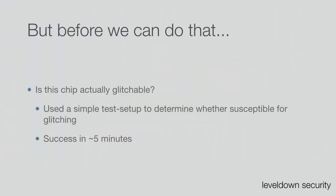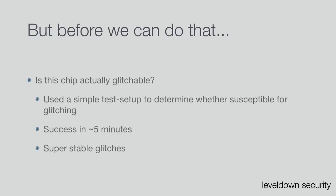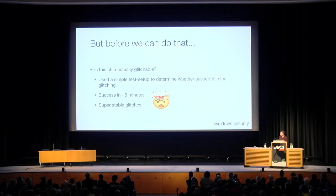I used a very simple setup where I had a firmware that tried to glitch out of a loop and enable an LED. I had success in less than five minutes — super stable glitches almost immediately. When I saw this I was 100% sure I messed up my setup or the compiler optimized out my loop, because I had never glitched a chip in five minutes. But I spent another two hours verifying the setup to confirm it was real.